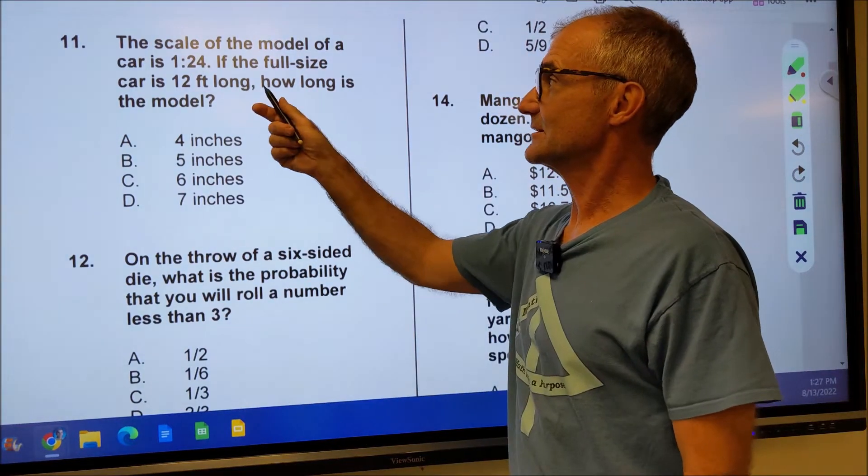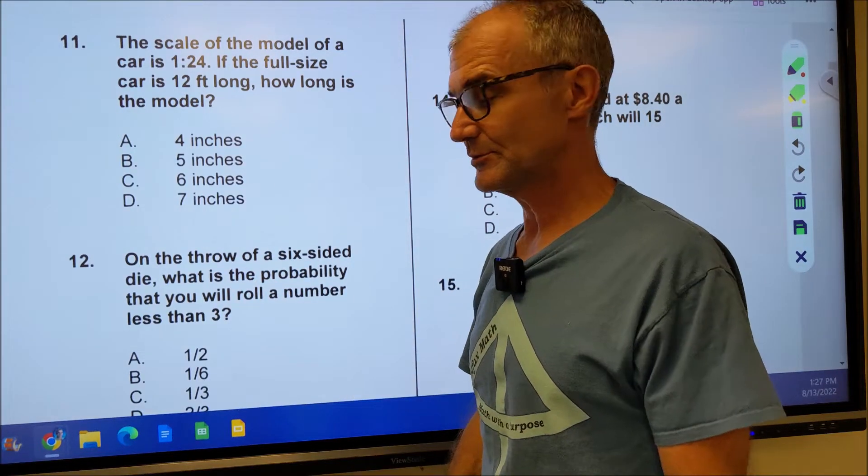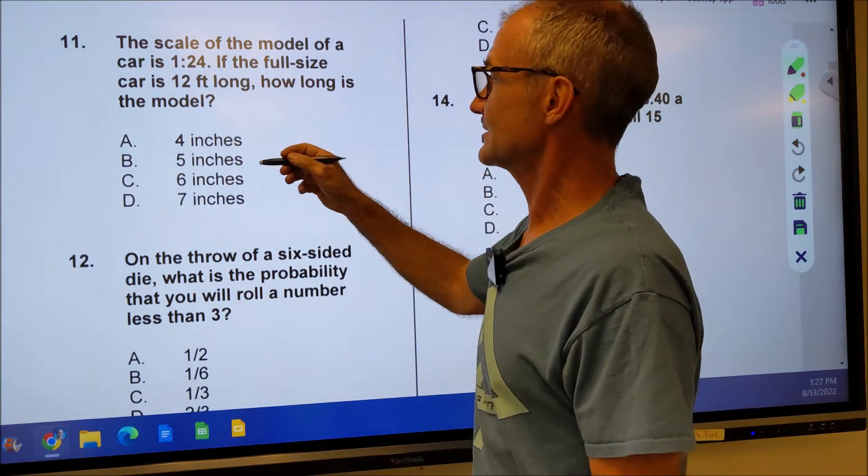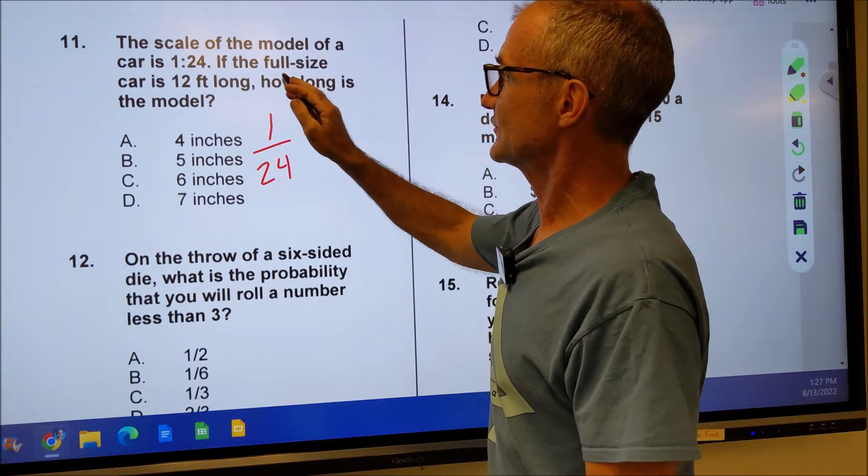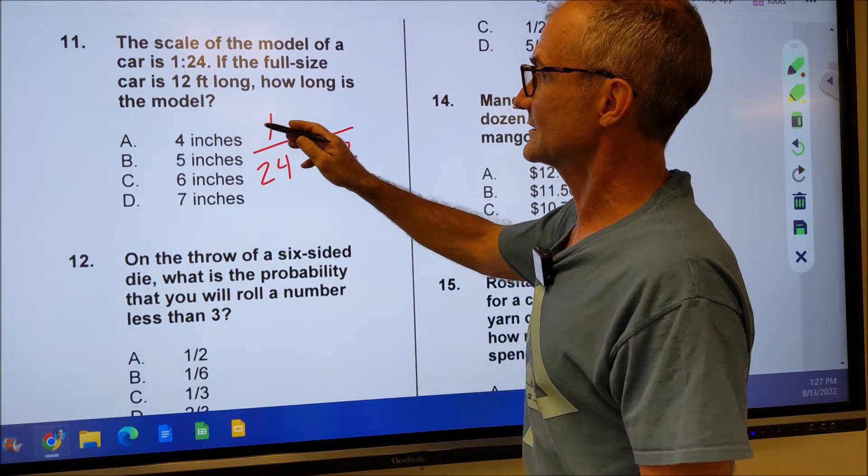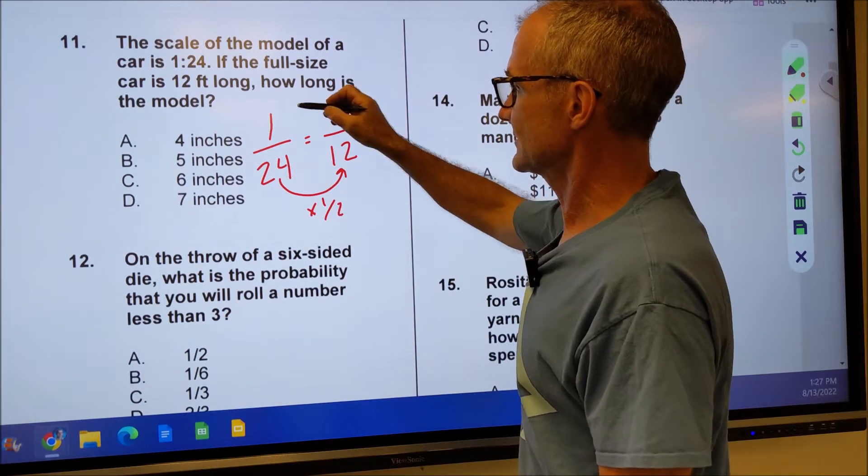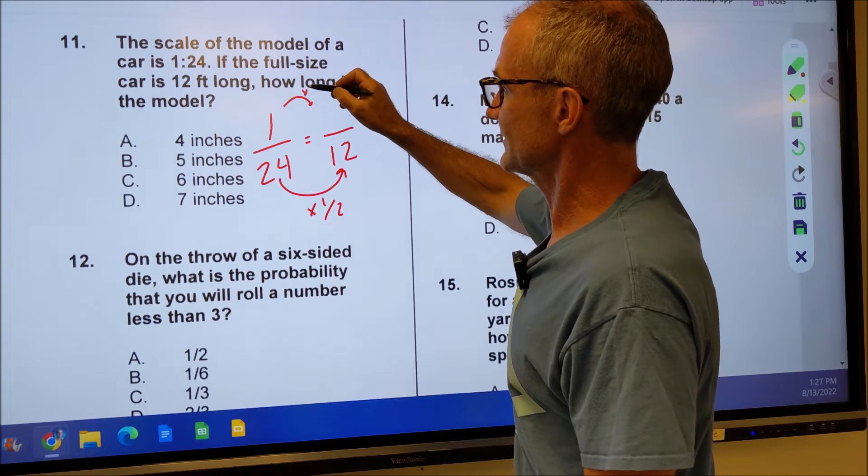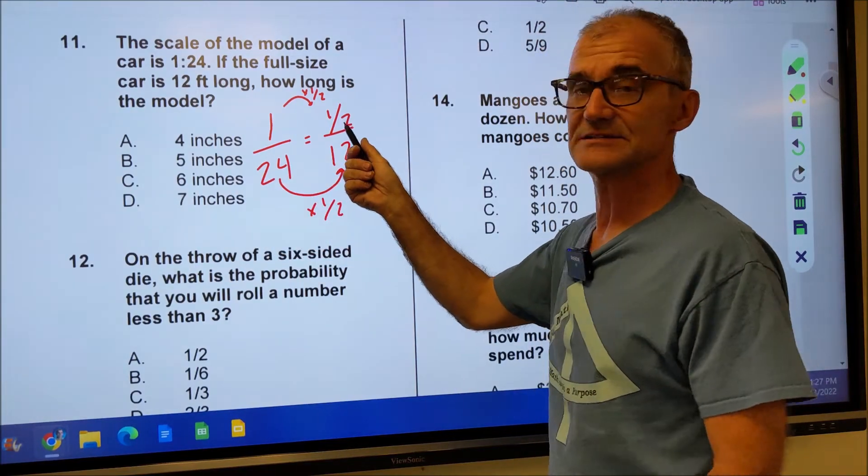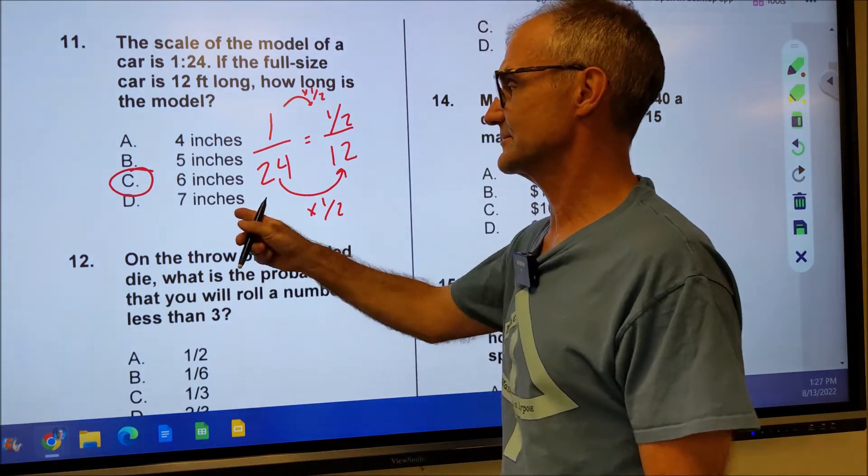Number 11, the scale of the model of a car is 1 to 24. This is also a ratio problem. Ratio set to another ratio is going to be a proportion. Chapter 5 in the foundations of math course. Let's go ahead and break this down. Scale of a model is a ratio of 1 to 24. If the full-size car is 12 feet long, how long is the model? Well, how do I go from 24 to 12? I multiply by a half. So I go from here to here by multiplying by half. One times a half is a half. So my answer is a half, but I don't see anything here. And that's because it's a half foot, 12 inches to the foot gives you six inches. A half foot is six inches. So there's your answer right there.